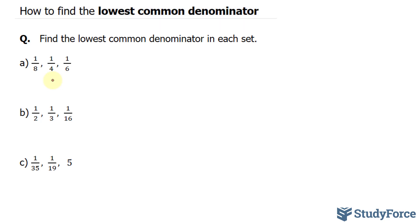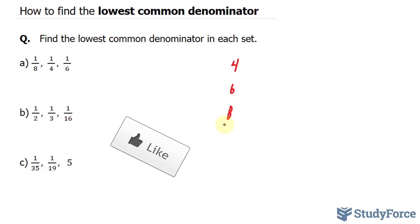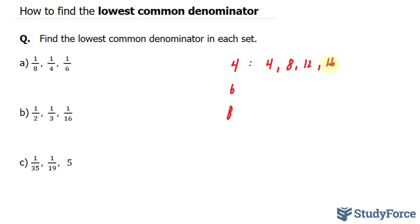We'll use method 1 for part A. Method 1 involves writing out multiples of each denominator. You can start by writing out each denominator from lowest to highest, so I have 4, 6, and 8. The next thing I like to do is write down at least 4 multiples of each. Starting with 4, the multiples are 4, 8, 12, and 16.